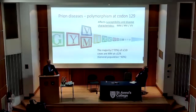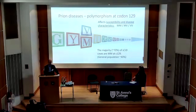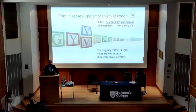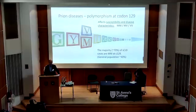We know that PRNP diseases are affected by a polymorphism — a genetic variation — at one particular important site called codon 129. At this amino acid position, it can either be methionine (M) or valine (V). This genetic variation doesn't cause or prevent PRNP diseases, but it affects susceptibility and disease characteristics. Because we inherit genes from both parents, our genotype at this site can be MM, MV, or VV. The majority of sporadic CJD cases are MM at codon 129, but in the general population it's only about 40%, so you can see it's having an effect.